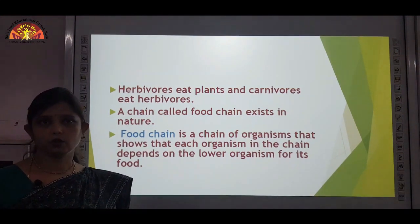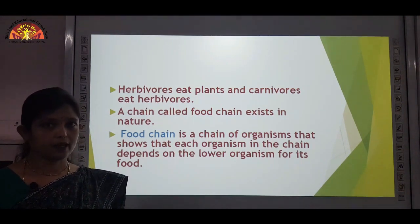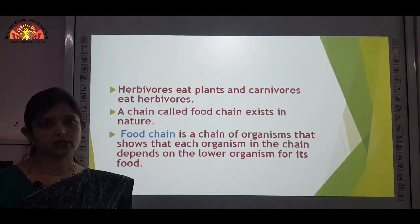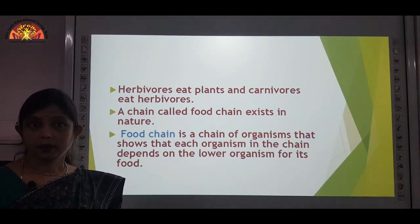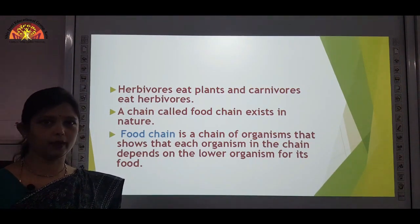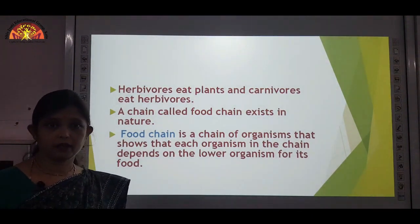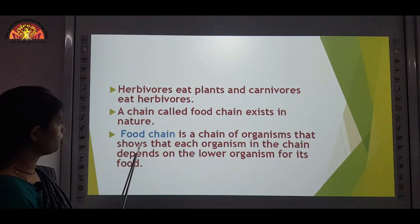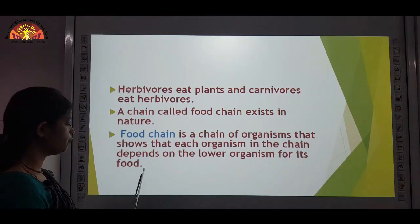Children, jab photosynthesis hota hai, to oxygen produce hoti hai. And this oxygen is used by us for breathing — it makes us alive. And similarly, jab hum breathe karte hai, to we give out carbon dioxide. And this carbon dioxide is used by plants, jaise hamne pehle pada hai, ki the raw materials for preparing food are carbon dioxide and water. So this raw material is provided by animals.